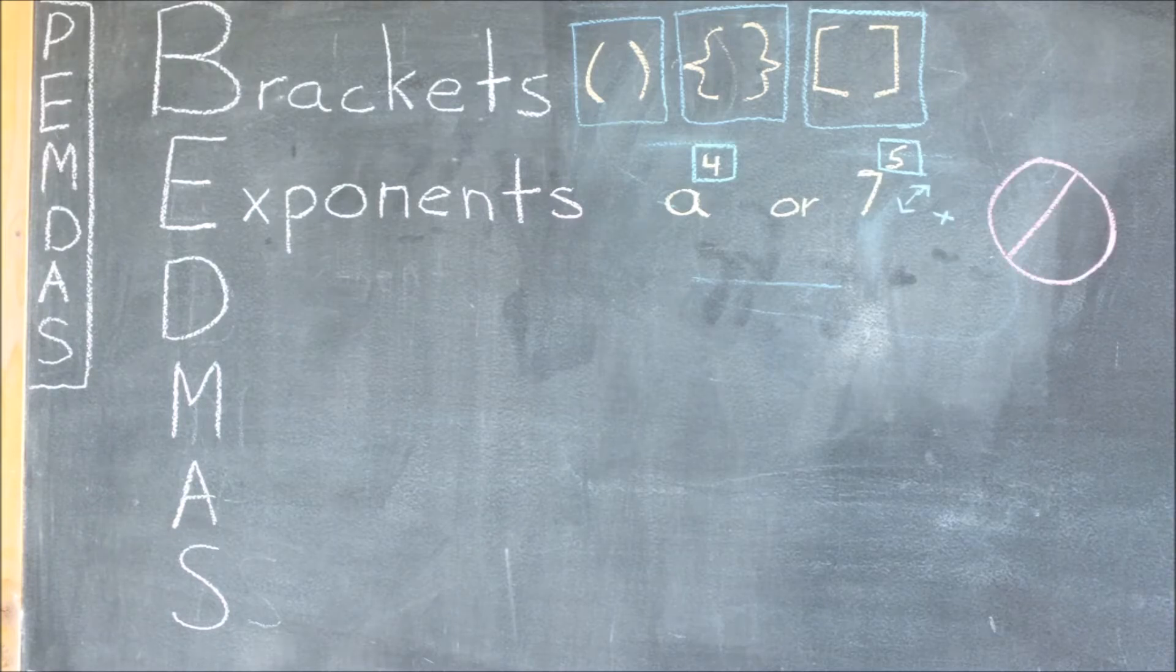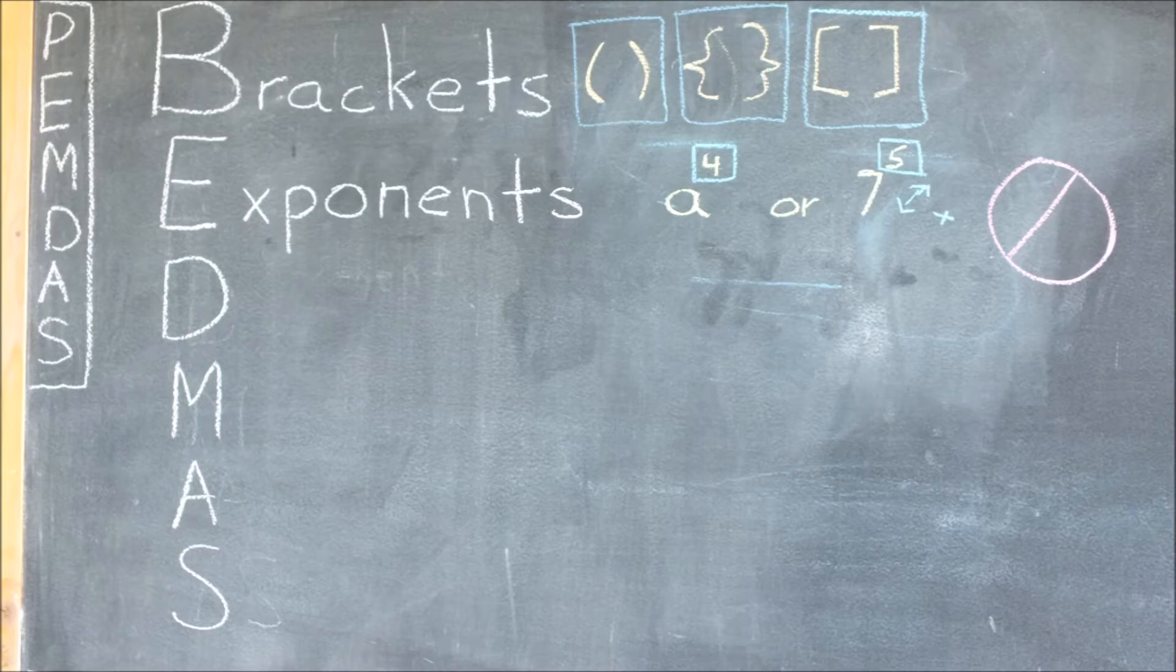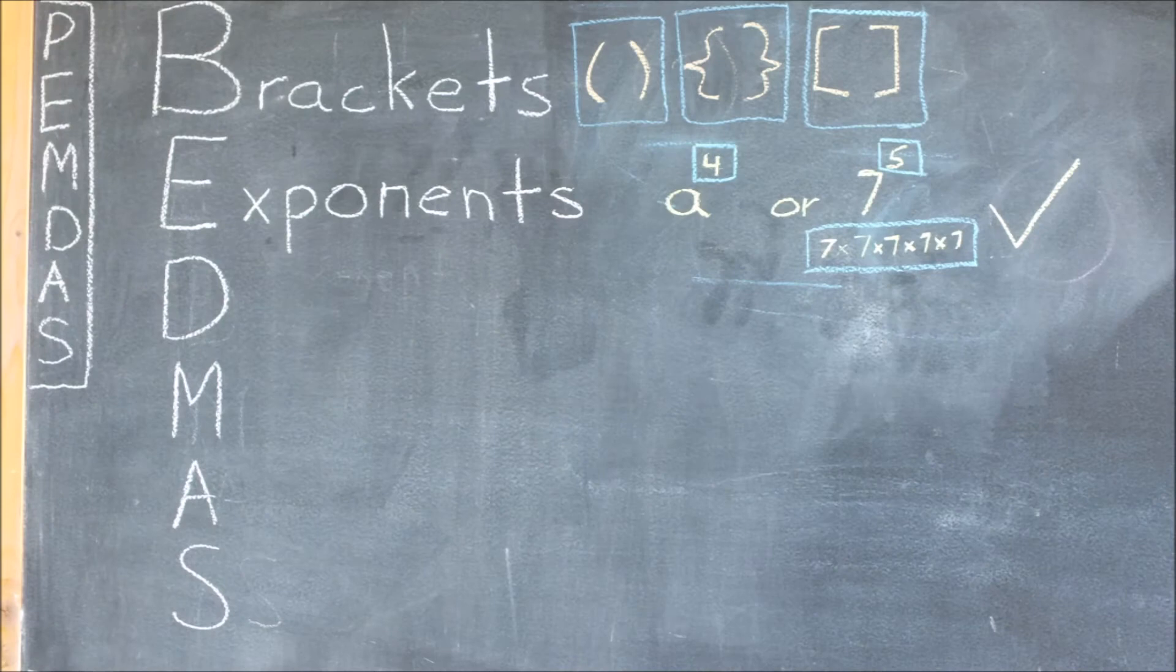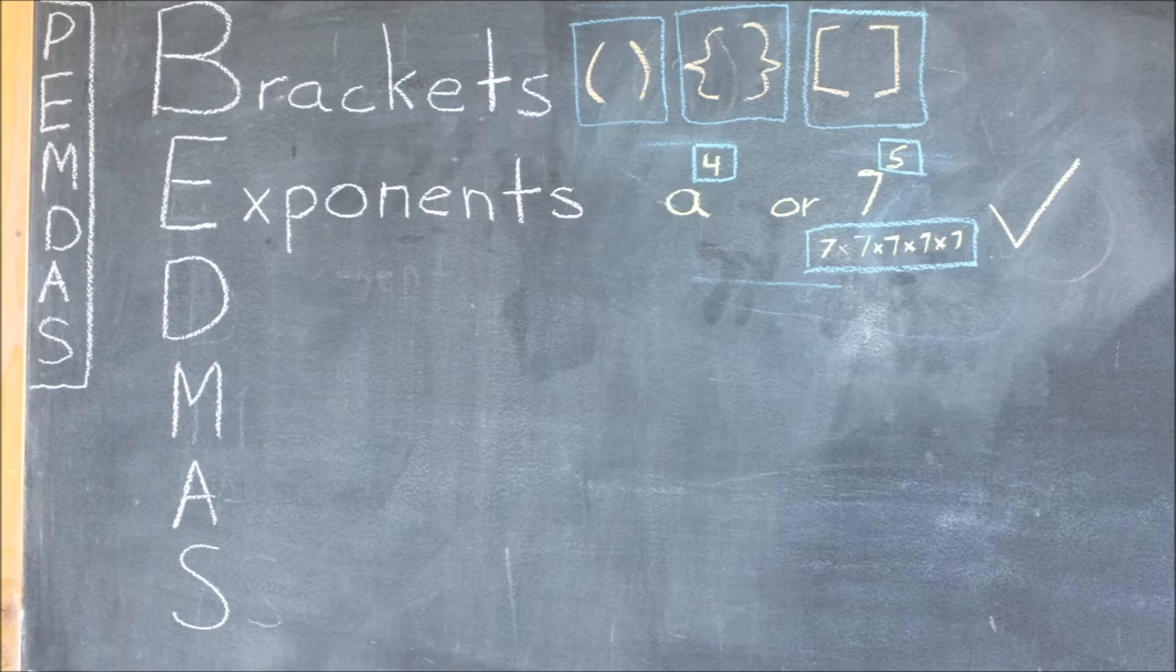Also, don't forget that even though the 5 is on top of the 7, it does not mean that 5 is being multiplied by 7. Instead, what it actually means is that 7 is being multiplied by itself 5 times.